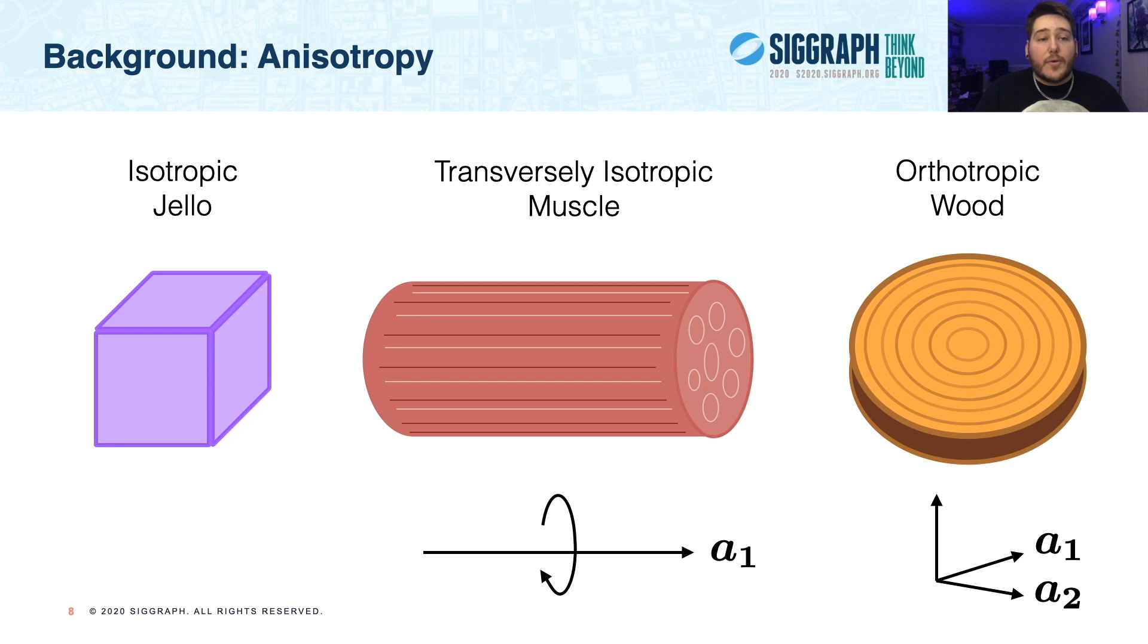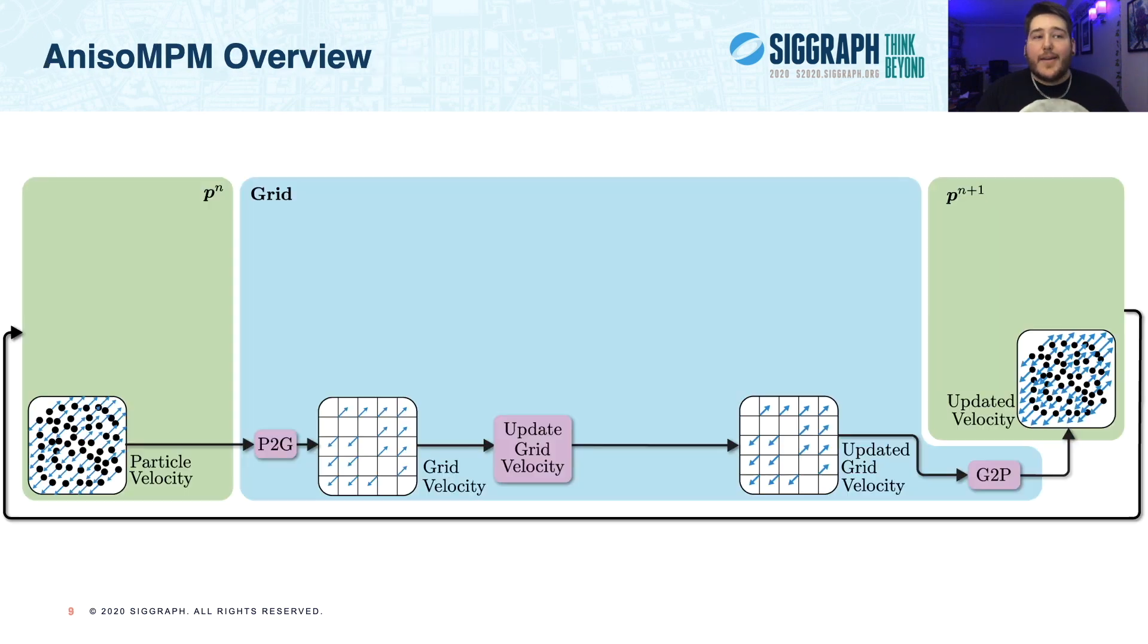And finally, orthotropic materials can define three mutually orthogonal axes that can each have different material responses. We only need to label two of these, so we add A2 to label the second axis. The most intuitive example of an orthotropic material is wood, where the underlying fibrils can change the behavior in the axial, radial, and circumferential directions.